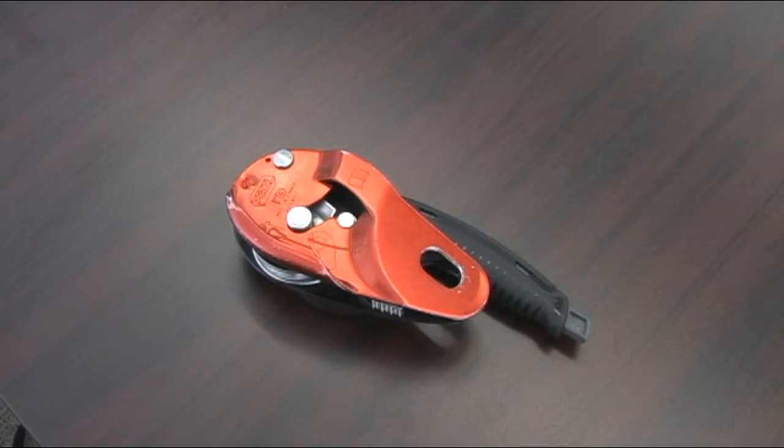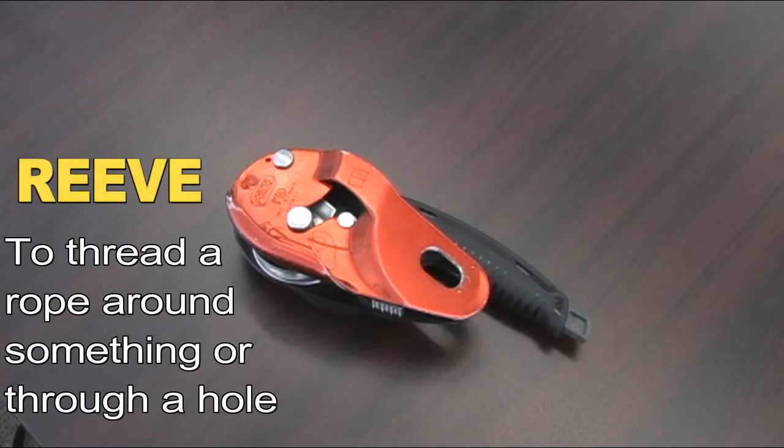What we're going to do in this tutorial is take a look at some of the safety features on the ID, the different forms of utilizing it, the correct way to reave it, and how to identify if you've reaved or threaded the rope through incorrectly.